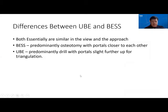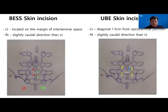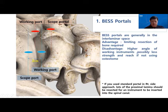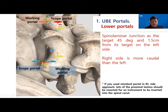The main difference I have highlighted is the use of osteotomy or drill in BESS versus UBE — otherwise they are pretty similar. In terms of the skin incision, BESS incisions are mainly in the interlaminar space while UBE portals are 1.5 cm away from the spinal laminar junction. I have done both types and personally find no difference in terms of outcome — it is really your comfort level.